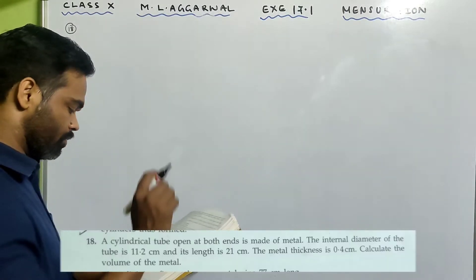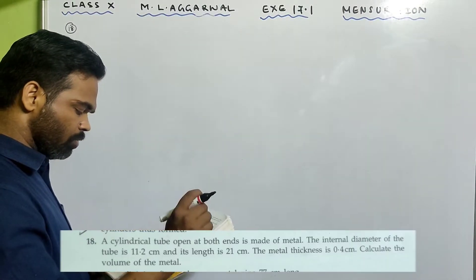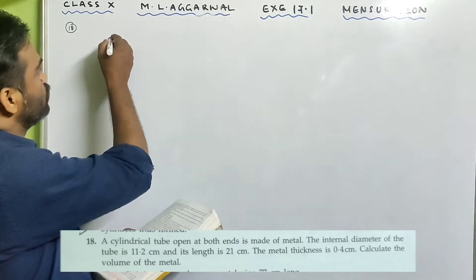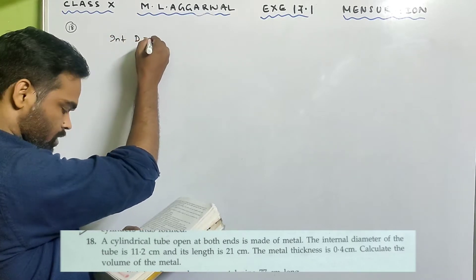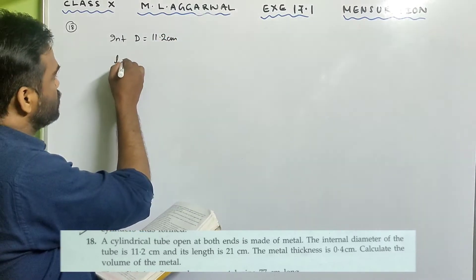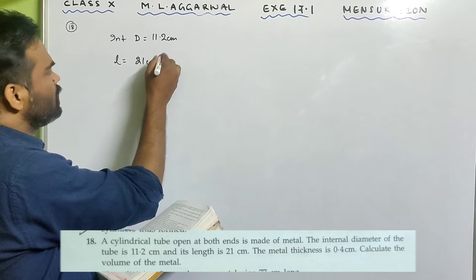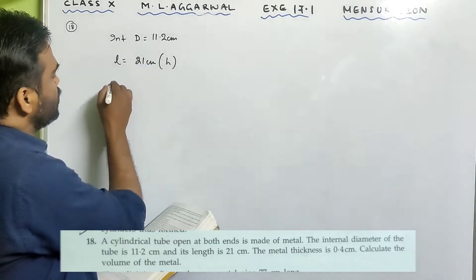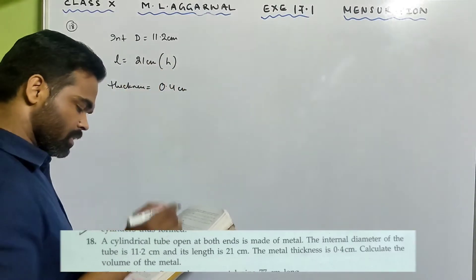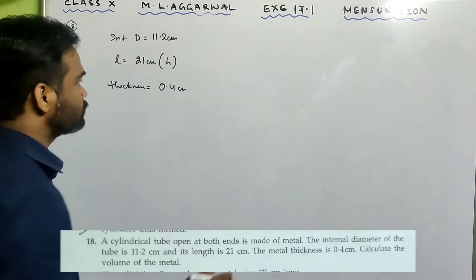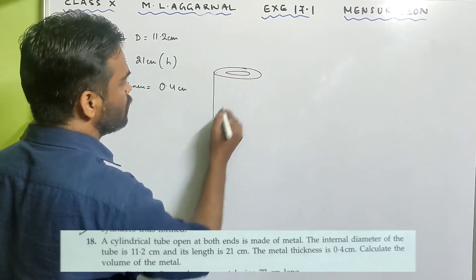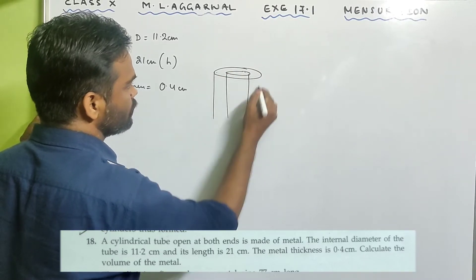Sum number 18, ML Agarwal Exercise 17.1, mensuration. A cylindrical tube open at both ends is made of metal. The internal diameter of the tube is 11.2 centimeter and its length is 21 centimeter — that's the height. The metal thickness is given as 0.4 centimeter. Calculate the volume of the metal. It's a hollow cylinder — just look at the diagram.